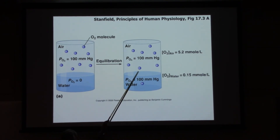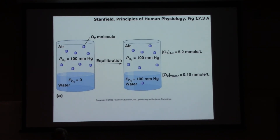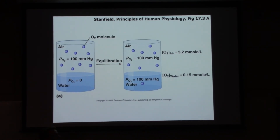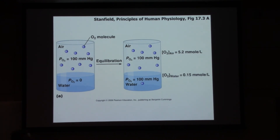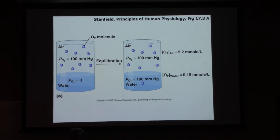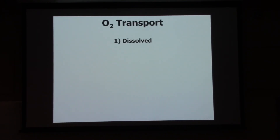What determines if oxygen is going to diffuse is the pressure gradient. But the cells care more about concentration - do I have oxygen molecules to work with or not? The pressure gradient drives which way it moves, but we need to carry enough oxygen. Oxygen just dissolved in blood plasma is not enough to serve the needs of your cells. So we need another mechanism - most of the oxygen in our blood is actually carried with hemoglobin, bound to hemoglobin.